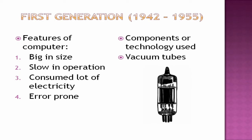The first generation of computers lasted from 1942 to 1955. The features were: big in size, slow in operation, consumed a lot of electricity, and was error prone. The technology component used was the vacuum tube, which was the key technology of the first generation of computers.